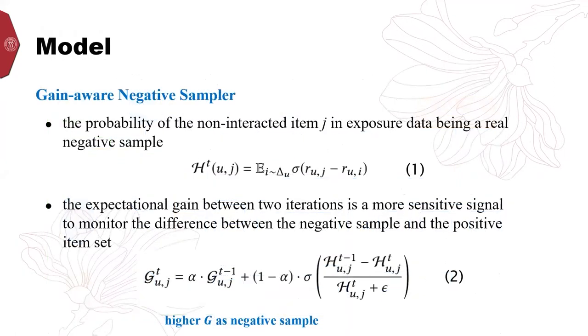In the gain-aware negative sampler, we first devise an exposure-aware function to measure negative signals in the exposure data. The probability of the non-interactive item j in the exposure data being a real negative sample is defined as equation 1. The equation 1 indicates the expectation of the non-interactive item j with the interactive item set delta u. The higher H value, the more likely it is to be a false negative sample.